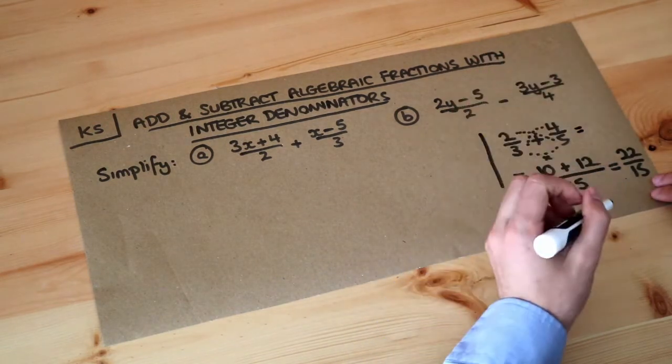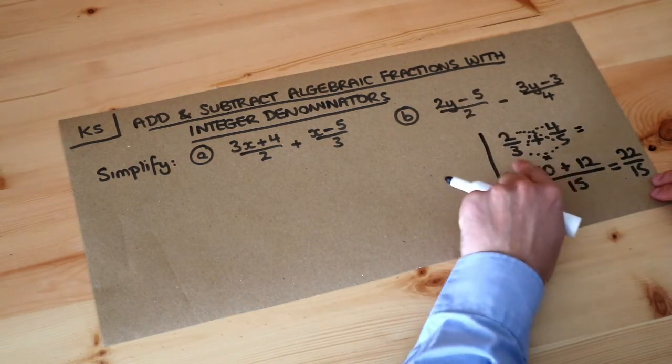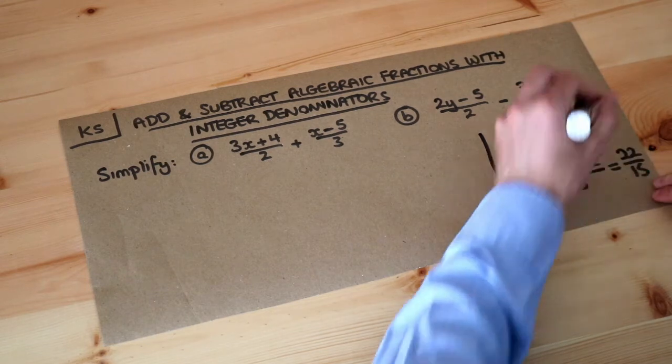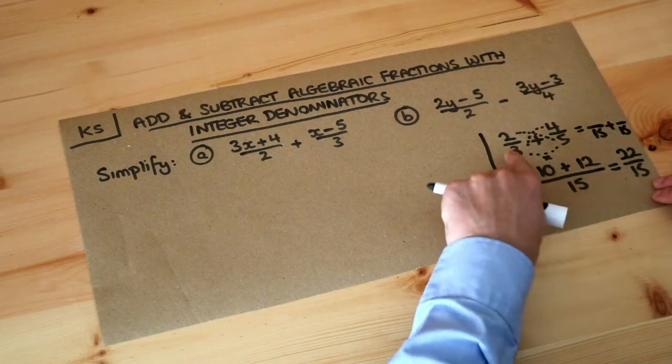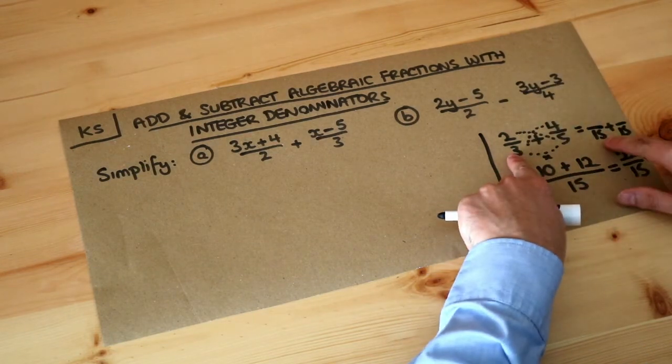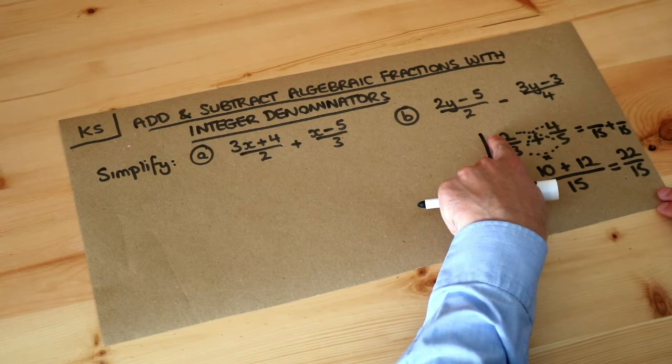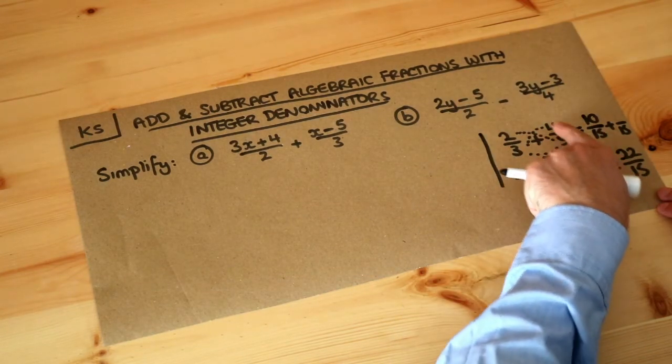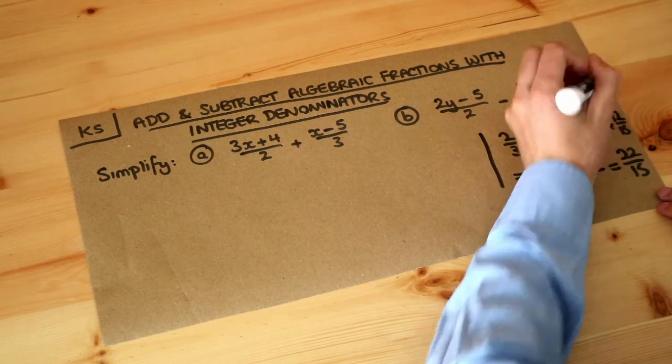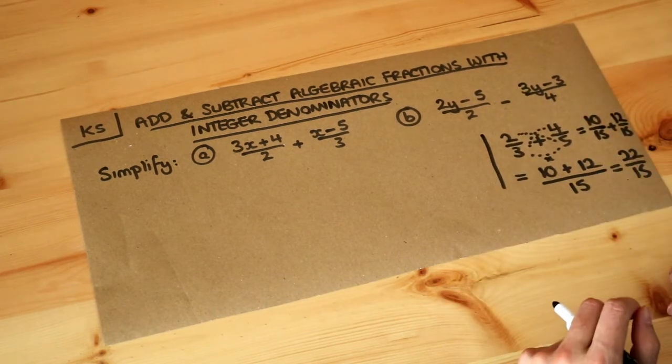So the other way we could do it, the long way, is just say, well what's the lowest common multiple of three and five? Well it's fifteen. So we make sure that each of the fractions are over fifteen. So to get from three to fifteen we times that by five, so two was multiplied by five. And this five has become fifteen, which is times by three, so the four times by three we get twelve. And you can see this is effectively the same in this particular case.